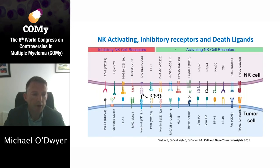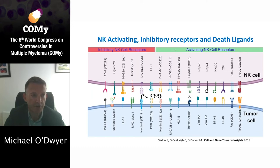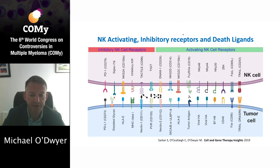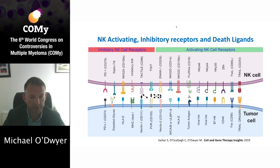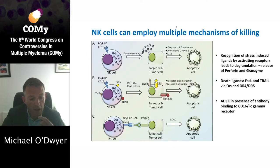However, apart from the KIR inhibitory receptors, which bind to classical MHC class 1 antigens, NK cells express a variety of other inhibitory receptors, as well as an array of activation receptors as shown here. In addition, various factors within the tumour microenvironment can influence NK activation status.